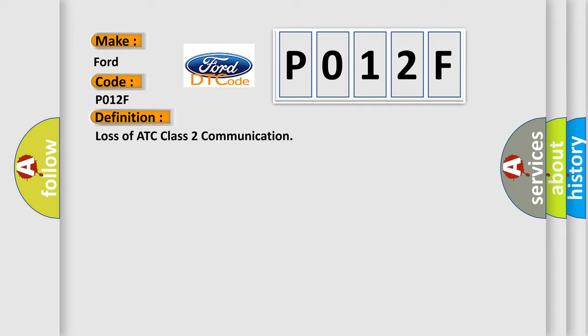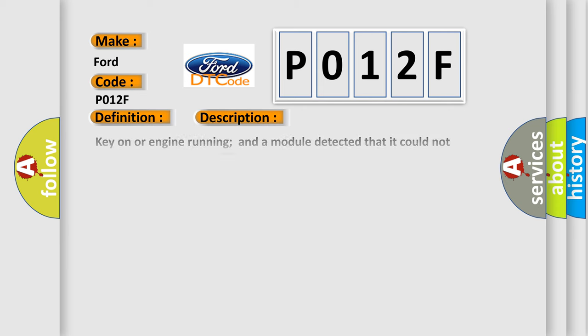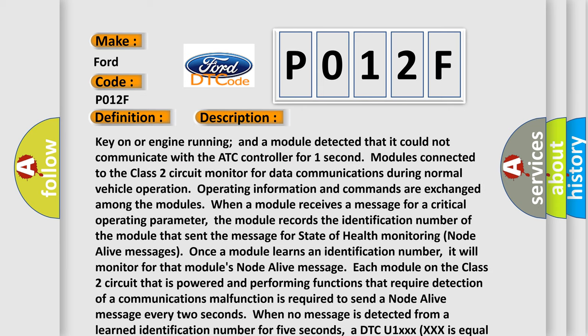Key on or engine running, and a module detected that it could not communicate with the ATC controller for one second. Modules connected to the class 2 circuit monitor for data communications during normal vehicle operation. Operating information and commands are exchanged among the modules. When a module receives a message for a critical operating parameter, the module records the identification number of the module that sent the message for state of health monitoring. Once a module learns an identification number, it will monitor for that module's node alive message.